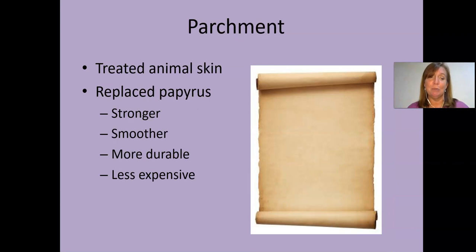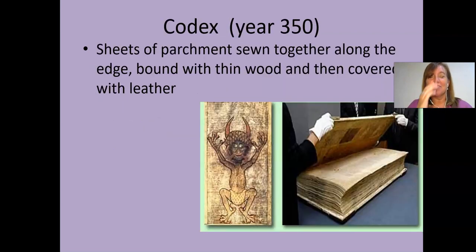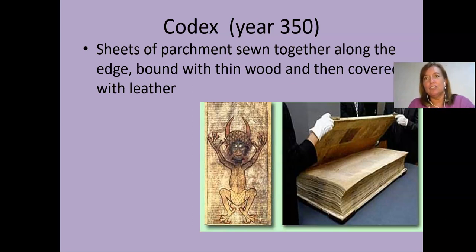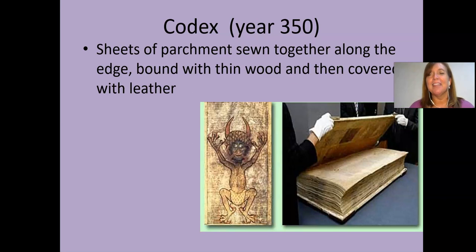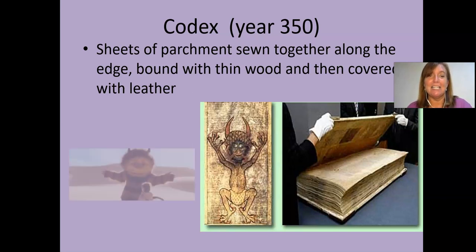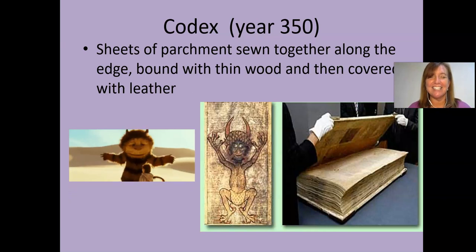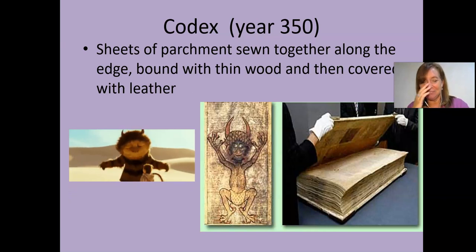The improvement was parchment — treated animal skin. It was stronger, smoother, lasted longer, and it was cheaper because you could just get animals from anywhere. One of the first recorded books is called a Codex, which is essentially layers of parchment sewn together with pieces of wood on either side. This is an image from one of the Codices — and I love it because it reminds me of Where the Wild Things Are. Doesn't it look like a wild thing?